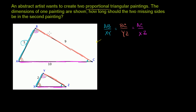They tell us AB is equal to 5, XY is equal to 2, and BC is equal to 9. YZ is one of the things we need to solve for. They also tell us AC is equal to 10, and we need to solve for XZ as well. We can create two separate equations, each with one unknown, and solve for each.